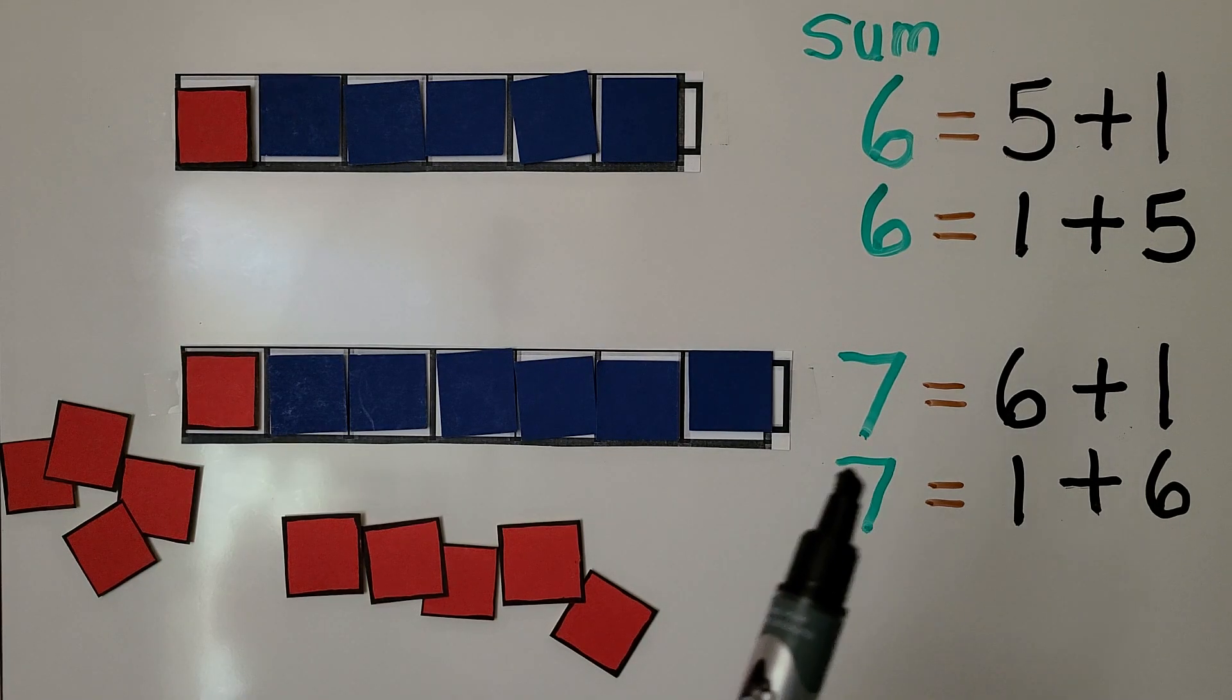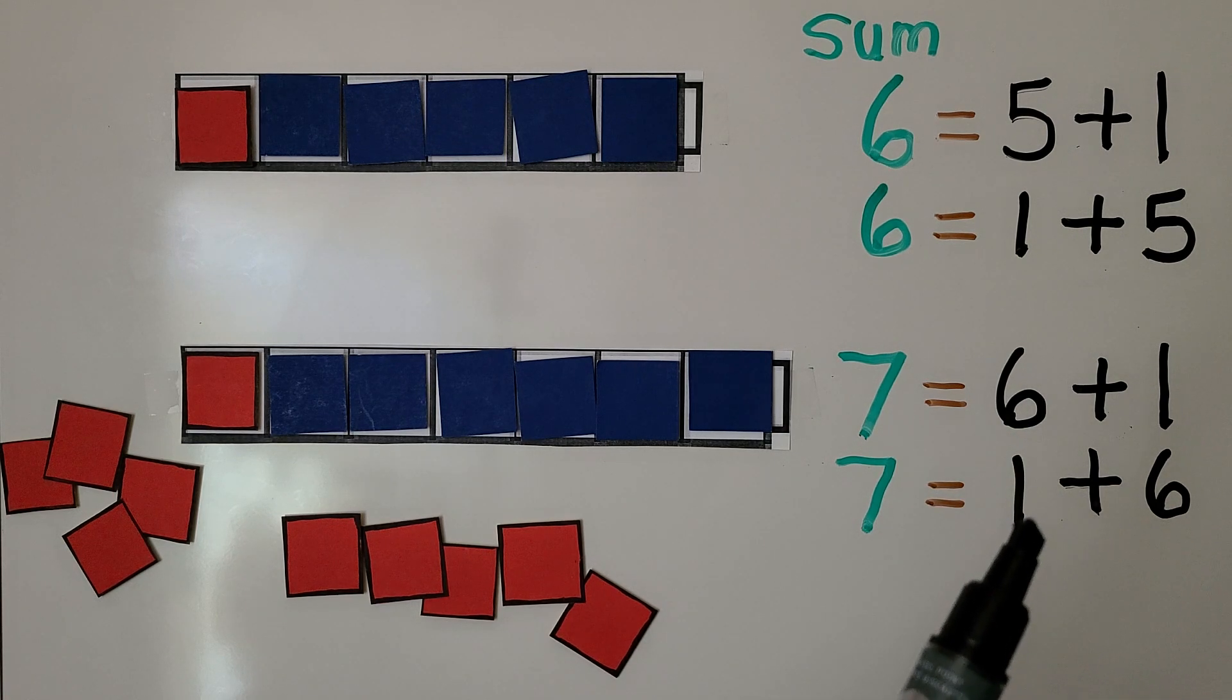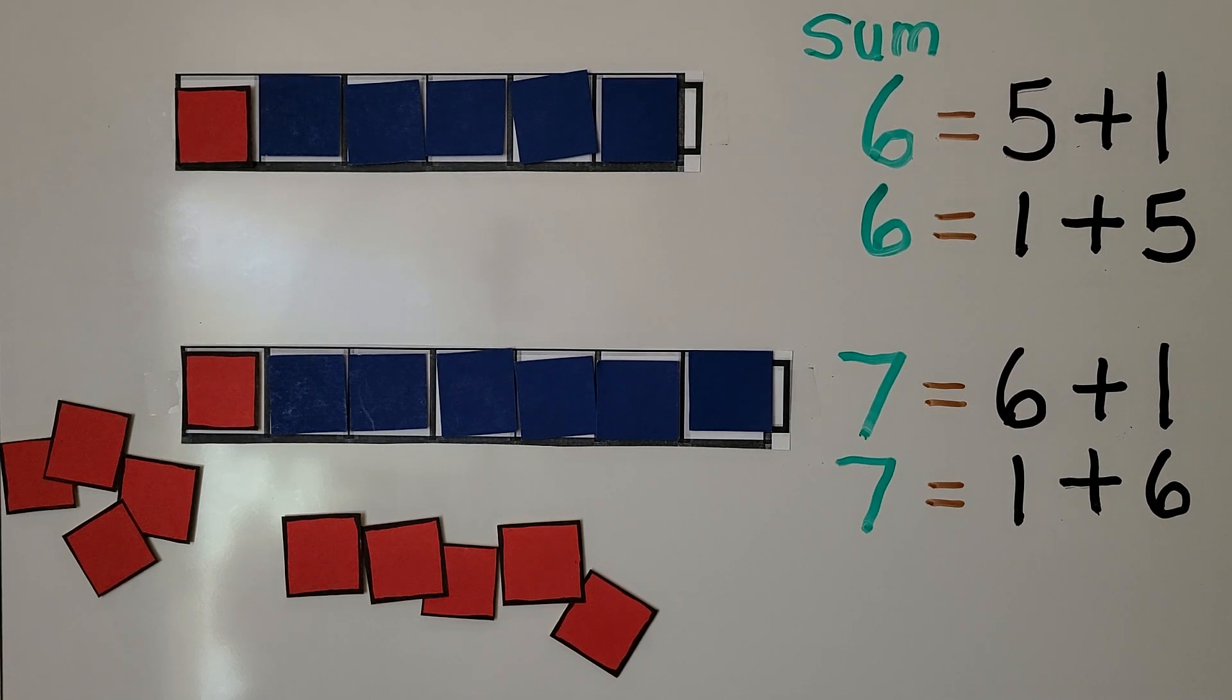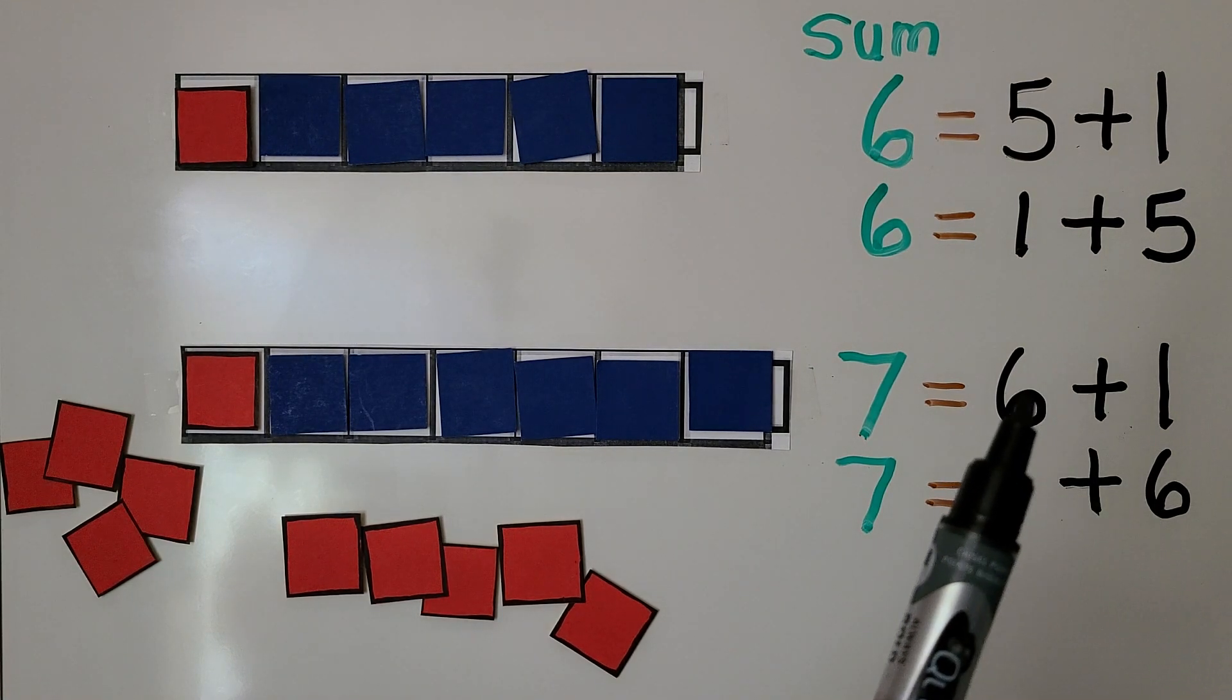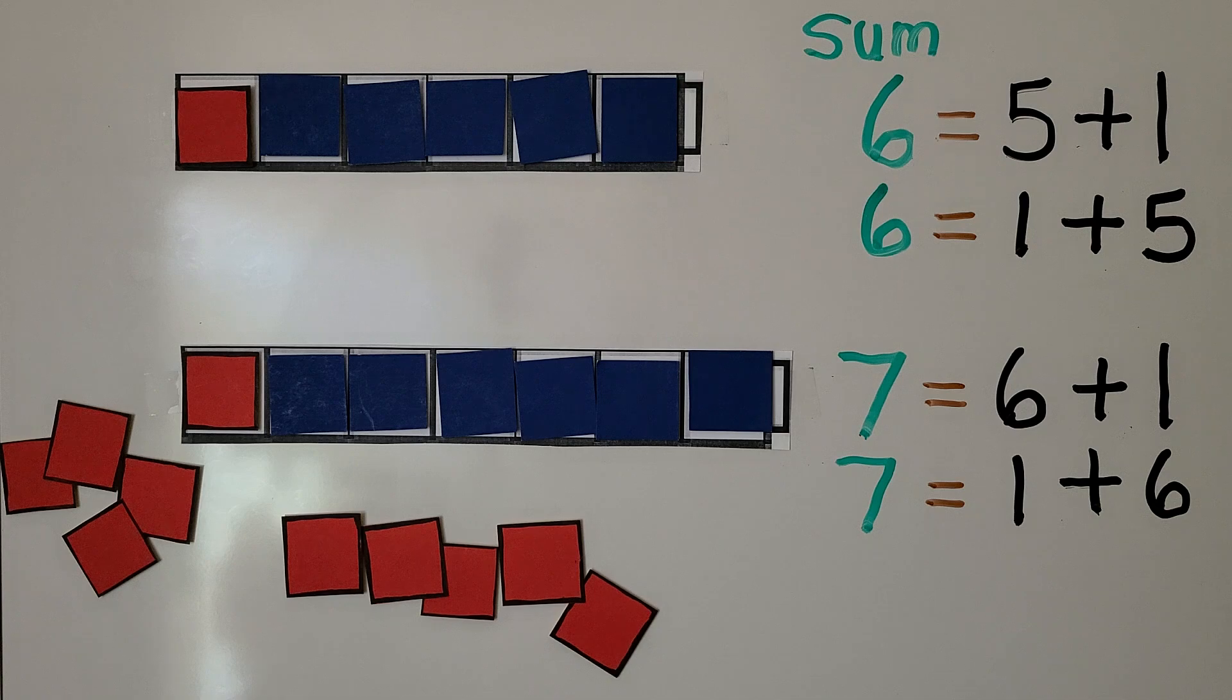We can show 7 as 6 plus 1 or we can show 7 as 1 plus 6. We can switch the numbers around. Instead of 6 red and 1 blue, we could do 1 red and 6 blue. It will still be equal to 7.